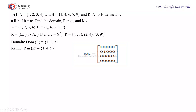So A = {1,2,3,4} and B = {1,4,6,8,9}. R = {(x,y) : x ∈ A, y ∈ B, y = x²}. So 1 is related to 1² = 1, and 2 is related to 2² = 4, and 3 is related to 3² = 9. Therefore, domain of R = {1, 2, 3} and range of R = {1, 4, 9}.